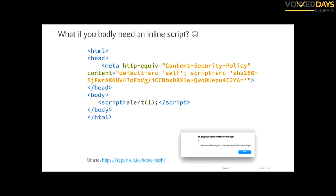If you really need an inline script, you can make a hash over the payload — the data between the two script tags — base64-encode it, and add it to the whitelist in script-src. The browser will then accept that specific inline script. So you can whitelist specific inline scripts. If an attacker manages to inject another inline script somewhere, it won't work because it's not in the whitelist.